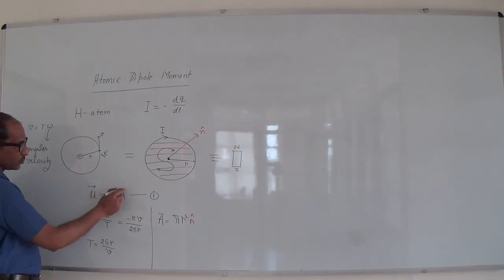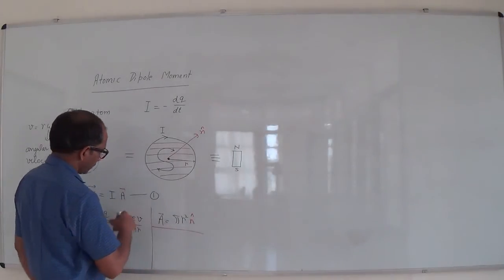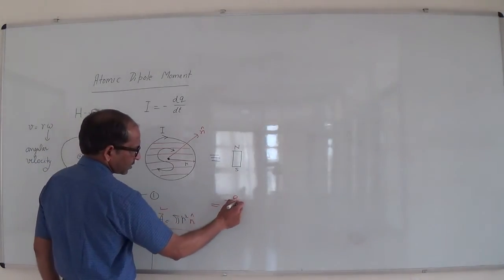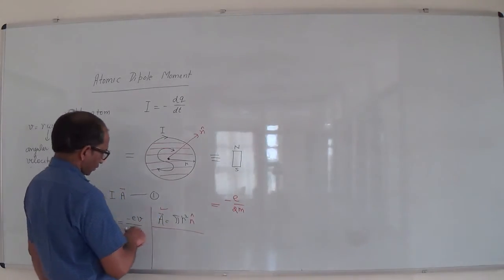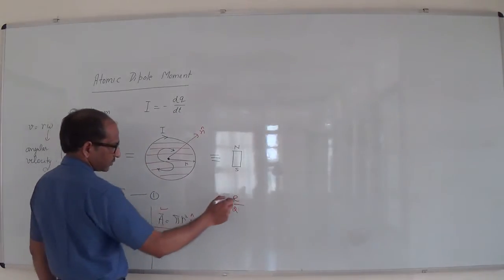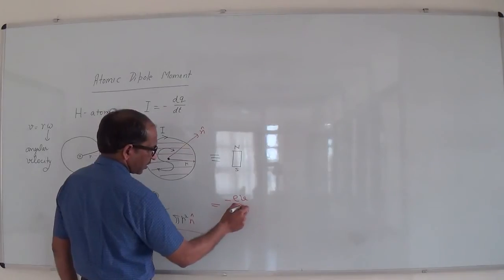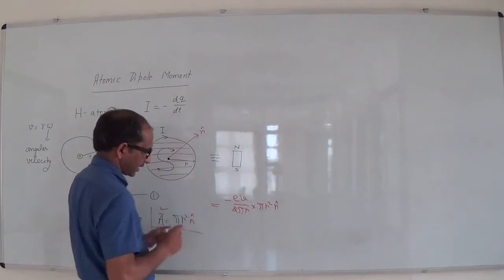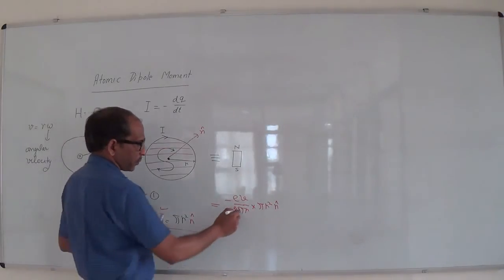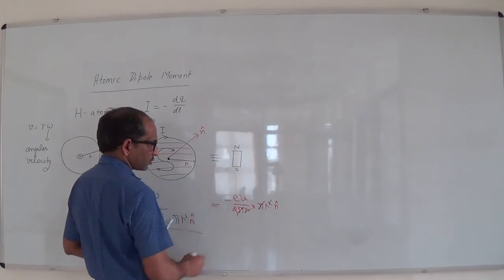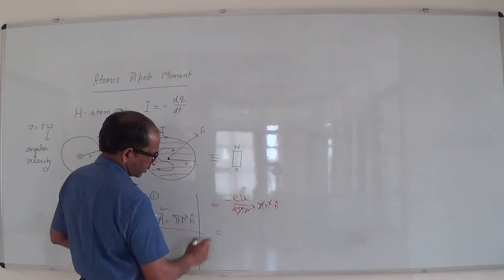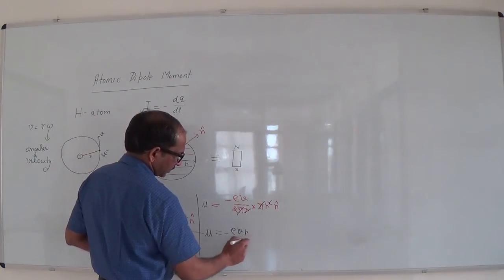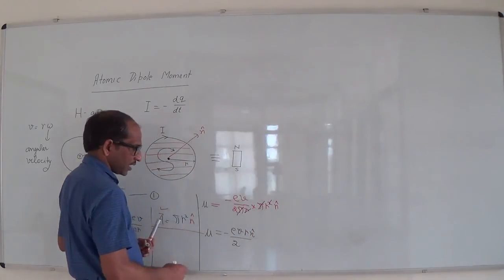Now mu = I·A. Substituting the value of I = -ev/(2πR) and A = πR²·N-hat into the equation: mu = [-ev/(2πR)] × πR²·N-hat. The pi terms cancel out, giving mu = -evR/2 · N-hat.